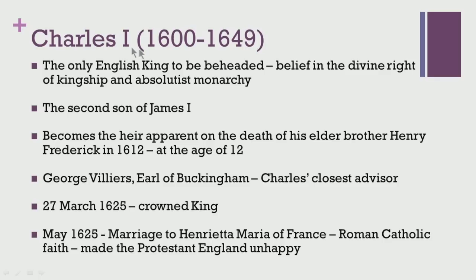It is first important to take a look at who Charles I was. He lived from 1600 to 1649 and has gone down in history as the only English king who was beheaded. What led to his downfall was his own belief in the divine right of kingship and his stubborn insistence on absolutist monarchy — a belief he had inherited from his father James I, who was also a staunch believer in absolutist monarchy. He was the second son of James I, but not the first choice for heir apparent. He became heir apparent only after the death of his elder brother Henry Frederick in 1612, and so at the age of 12, Charles I became heir apparent of England, Ireland, and Scotland.